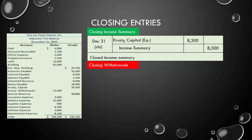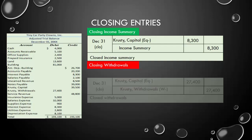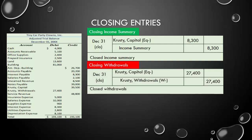For withdrawals, we find that balance on the adjusted trial balance. Mr. Krusty took out $27,400 from the business during the period. It has a debit balance, so to close it, we credit the withdrawals account for $27,400. The debit goes to Krusty Capital, and with this entry, we close withdrawals.